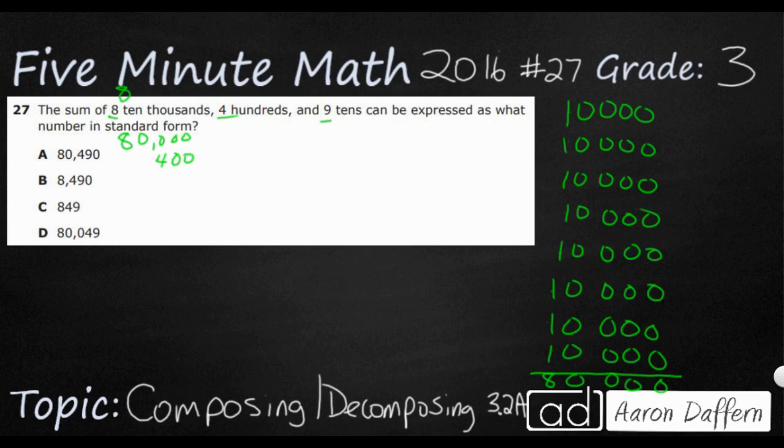And then I've got nine tens. I can skip count by tens if I want to. Ten, twenty, thirty, forty, fifty, sixty, seventy, eighty, ninety. Or I can just remember that nine tens is nine times ten, and that's ninety.